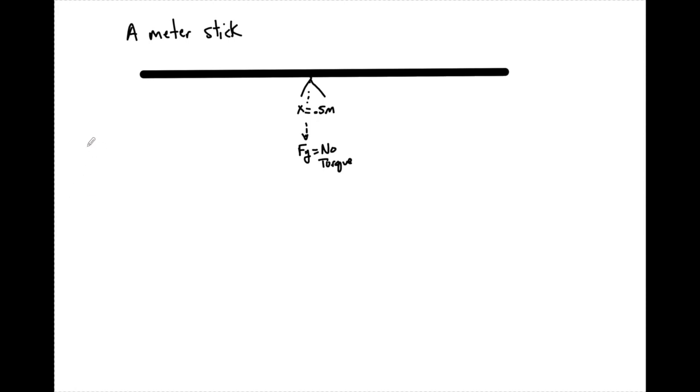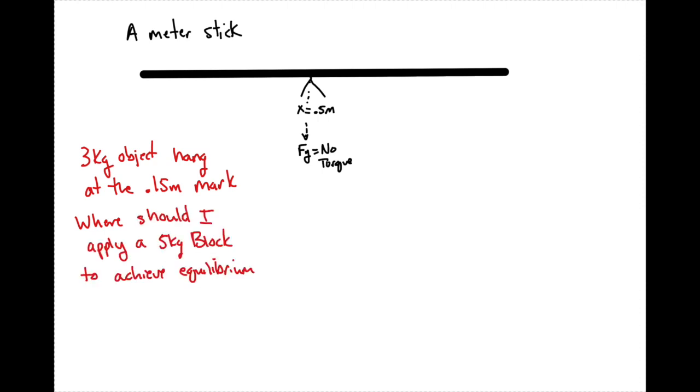So I'm now going to say that there's a three kilogram object at the 0.15 meter mark. And I want to know where should I put a five kilogram block to achieve equilibrium? Okay. So just to get a basis, I'm going to call this on the meter stick, x equals zero meters. And I'm going to call this over here, x equals one meter. So now I can say that right here at 0.15, I'm going to have a three kilogram object.